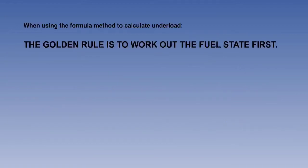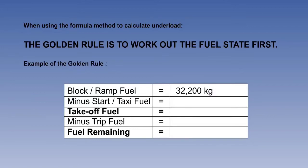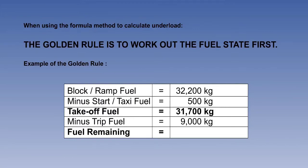A golden rule to follow when using the formulas is to first determine both the take-off fuel mass and the fuel remaining on landing. Starting with a block ramp fuel of 32,200 kilograms, we subtract the start taxi fuel of 500 kilograms, which gives us a take-off fuel of 31,700 kilograms. The trip fuel is 9,000 kilograms, and subtracting this from the take-off fuel gives a fuel remaining of 22,700 kilograms.